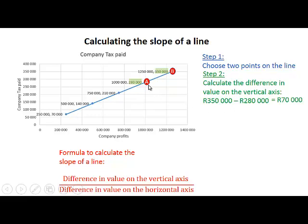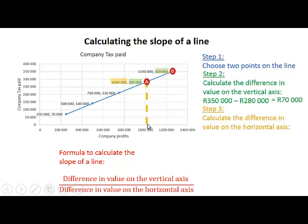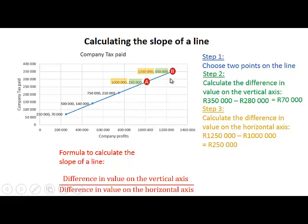Company tax paid increases by 70,000 when we move from point A to point B. Now we calculate the difference in value on the horizontal axis. At point A, company profits is 1,000,000, and at point B, company profits is 1,250,000. So the difference is 1,250,000 minus 1,000,000 — company profits increased by 250,000 from point A to point B.